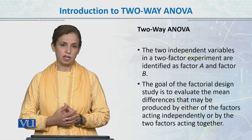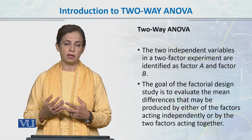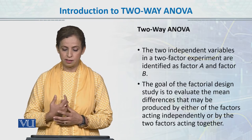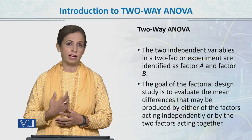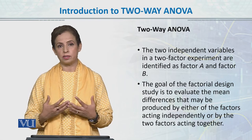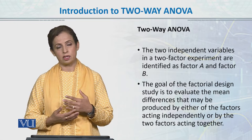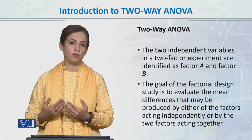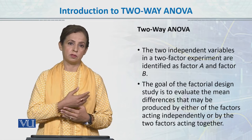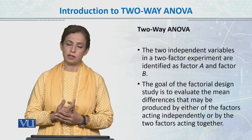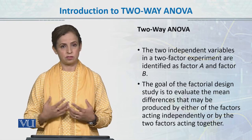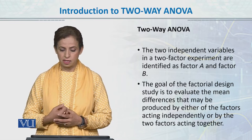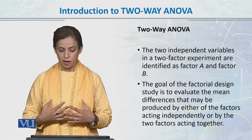In the two-factor two-way design, we call the two independent variables factor A and factor B. The goal of a factorial design study is to evaluate mean differences, as we did in ANOVA and t-test. In t-test we had one independent variable with two groups; in one-way ANOVA we had one independent variable with more than two groups. In two-way ANOVA we have two independent variables with at least two levels each, studying mean differences across groups produced by either factor acting independently or both factors acting together.